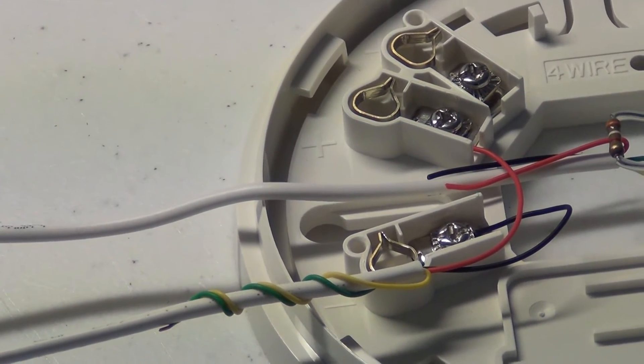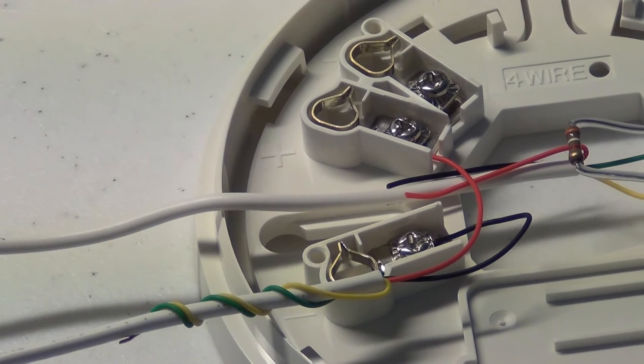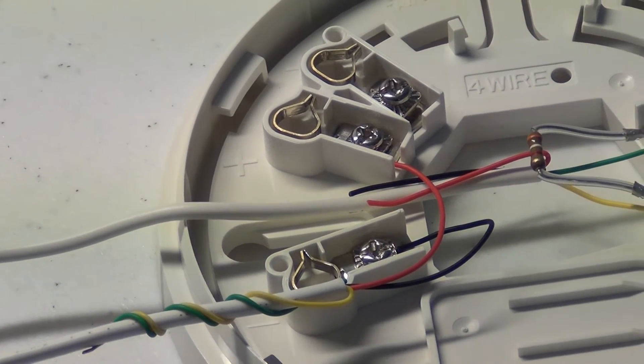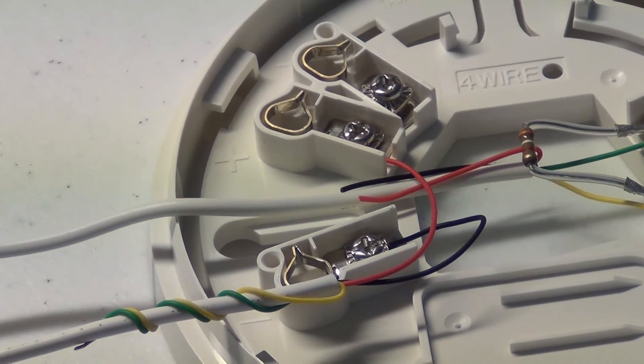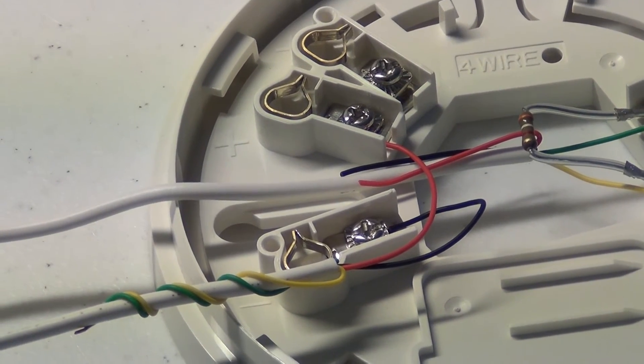If you're familiar with smoke detector hookups you know that they have power wires, two wires have power wires and that's it, and then four wires have power wires and two data wires. So these basically act as your power wires and your data wires.